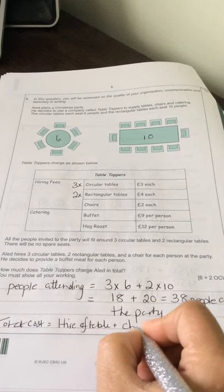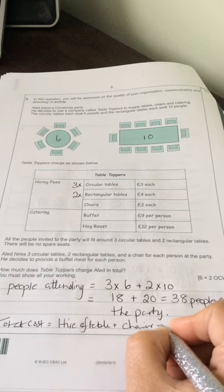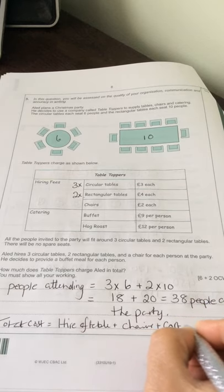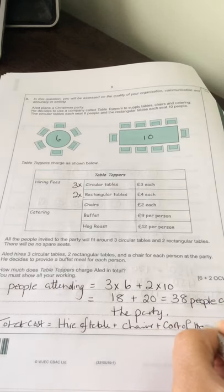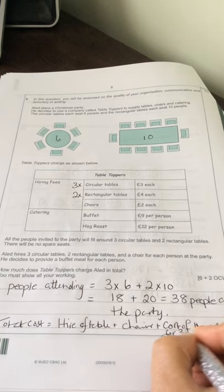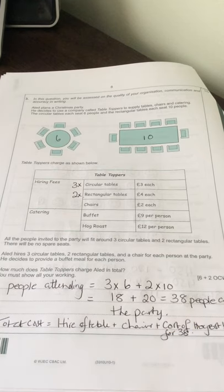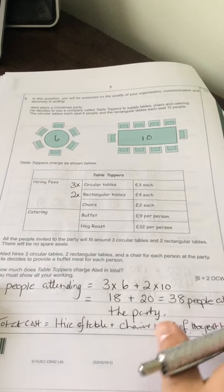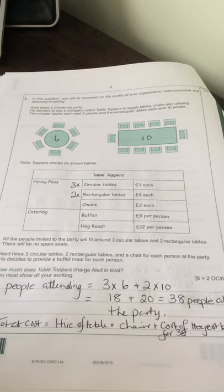and the chairs plus the cost of the buffet for thirty-eight people. So we need to break it down. So the first thing I'm going to do, and obviously it's up to you how you do this, because there's lots of ways to do these questions. First thing I'm going to do is work out the hire of the tables.